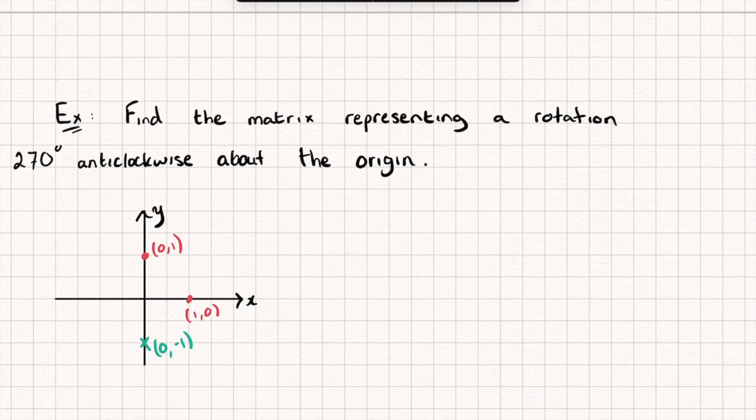Let's do the same—let's see what happens to the point (0,1). So it's rotated 90, 180, 270, and it ends up here with the coordinates (1,0). And so the transformation matrix is going to be (0,-1,1,0).